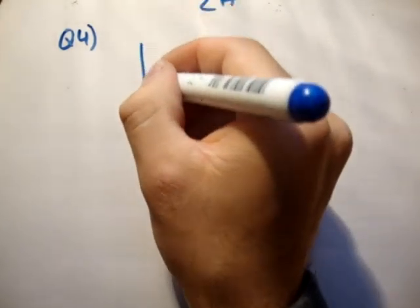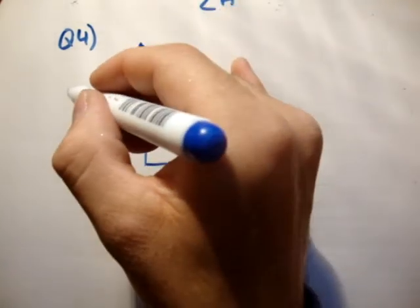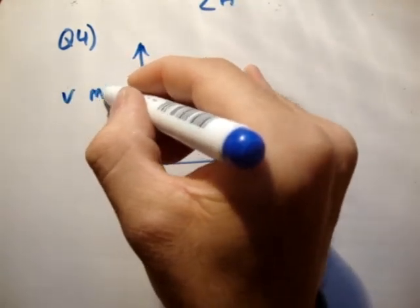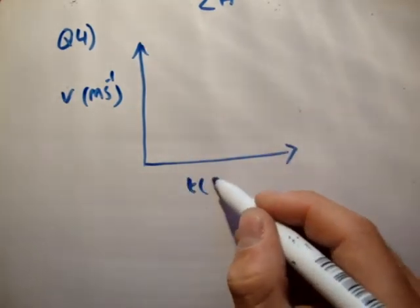So where do we start with this? The same place we start with every one of these questions. We draw our speed time graph. Speed is on the y-axis, measured in meters per second, and time is measured in seconds on the x-axis.